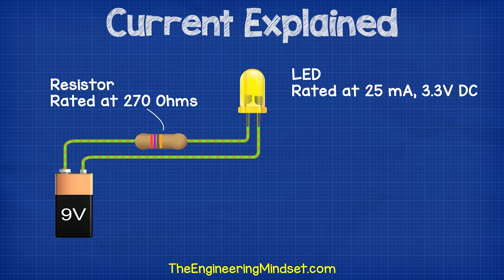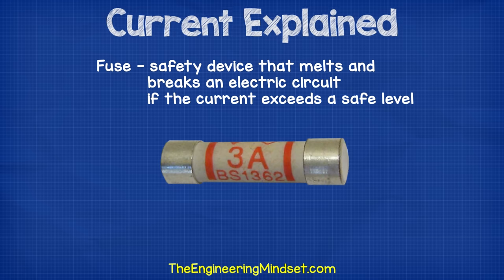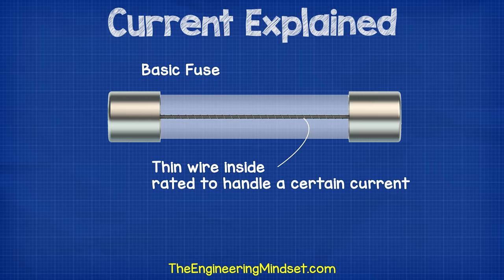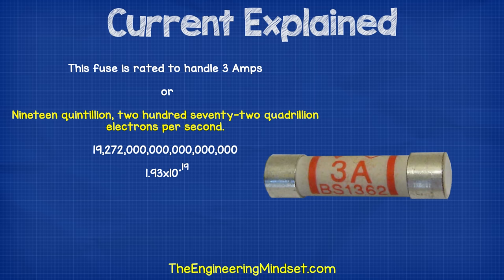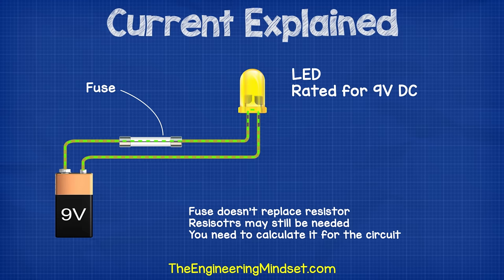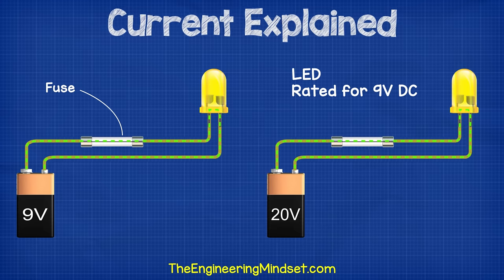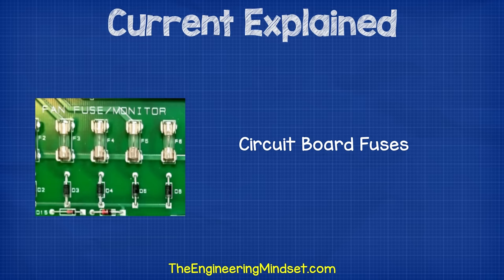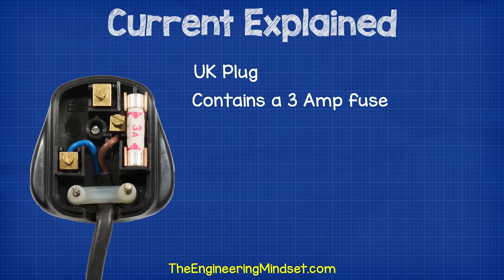We saw earlier that we can use resistors to reduce the amount of current flowing in the circuit and protect our devices. Another thing we can use is a fuse. Fuses in a basic sense have a thin piece of wire inside them which is rated to handle a certain amount of current flowing through them. This one is rated to handle 3 amps, or 19 quintillion 272 quadrillion electrons per second. The fuse acts as a weak point and is very cheap to replace, so if too much current flows in the circuit, it will burn out and open to break the circuit and protect the more expensive electrical components. You can find these mounted on circuit boards and also built into some plugs — for example, this plug from the UK has a fuse built into it to protect the electrical device.